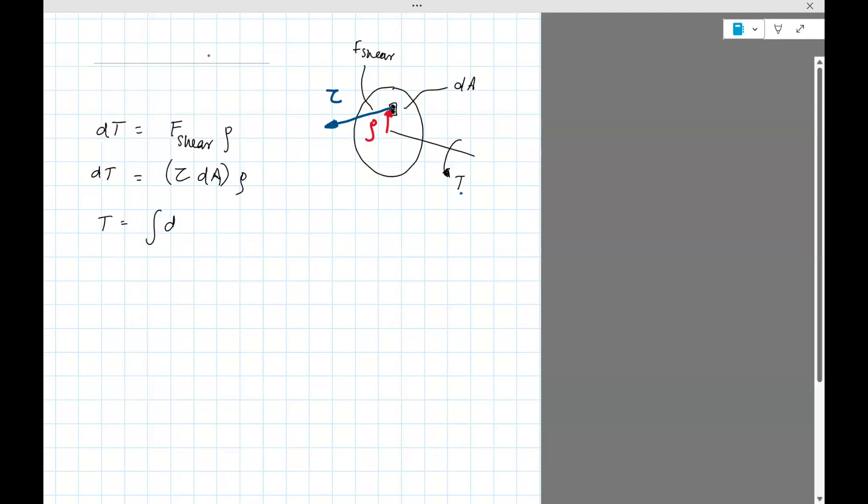So if you want the torque, it should be integral zero to T, integral over the area. So tau dA times rho. Yeah, so we need to somehow substitute in the value for tau. But we know what tau is. Tau divided by tau max is rho divided by C. So tau is rho divided by C times tau max.